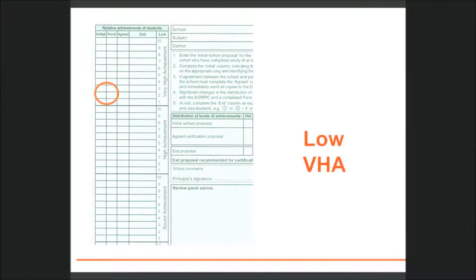So, an appropriate decision might be to place the folio at low, or towards the bottom of very high achievement. There may be a number of students with similar achievement. The school will make rung placement decisions for each student with similar achievement by looking at the extent to which the syllabus exit standards have been demonstrated for each dimension. In this example, the placement will be determined by considering the evidence of B and C standard qualities in the folio.